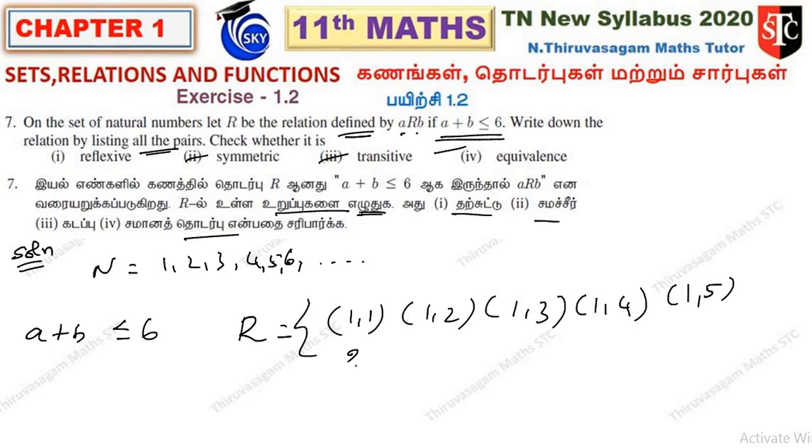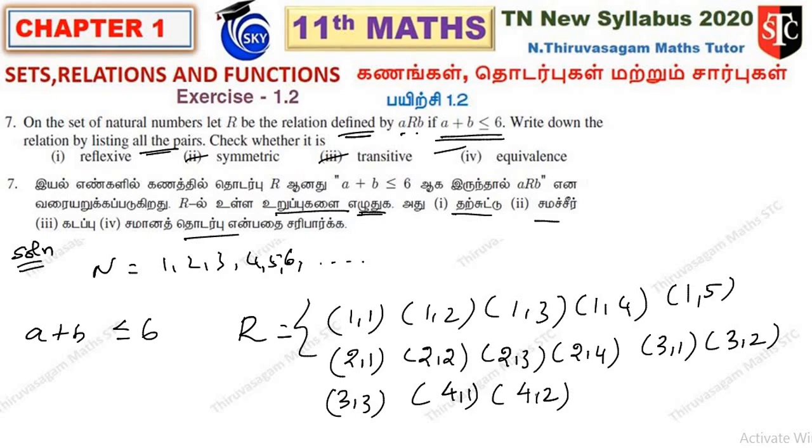Next, (2,4) since 2 plus 4 is 6, (3,1), (3,2) since 3 plus 2 is 5, (3,3) since 3 plus 3 is 6, (4,1), (4,2) since 4 plus 2 is 6.